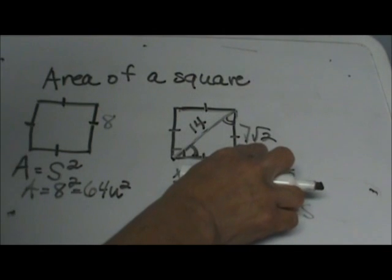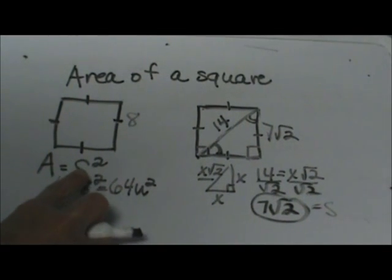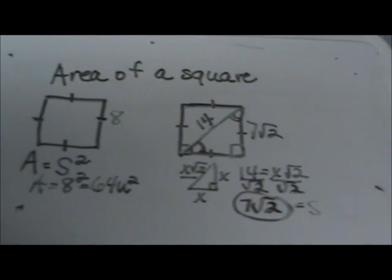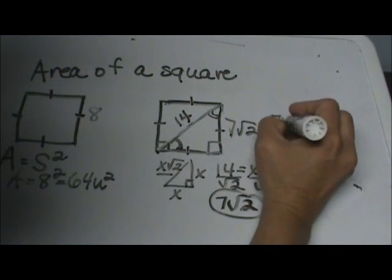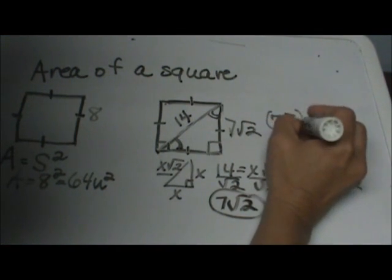So now we're going to take that 7 square root of 2 and plug it back into our area formula. So let's plug that in: 7 square root of 2, quantity squared.